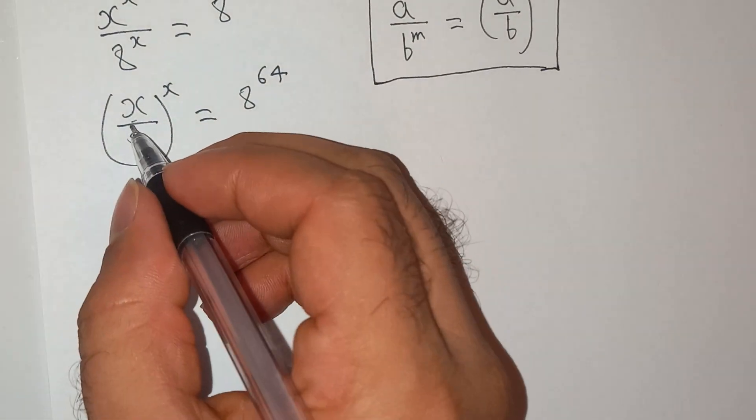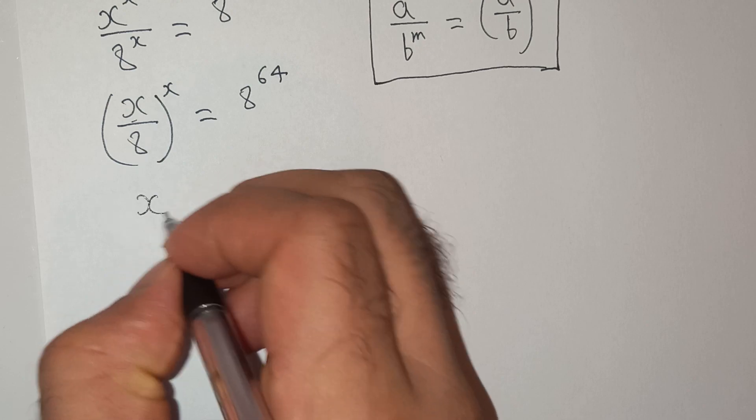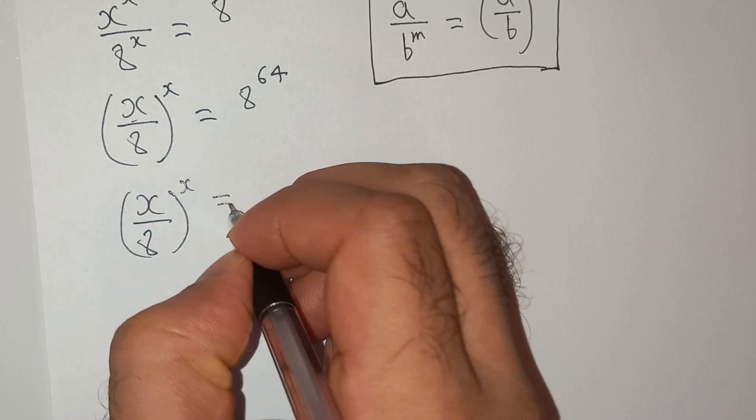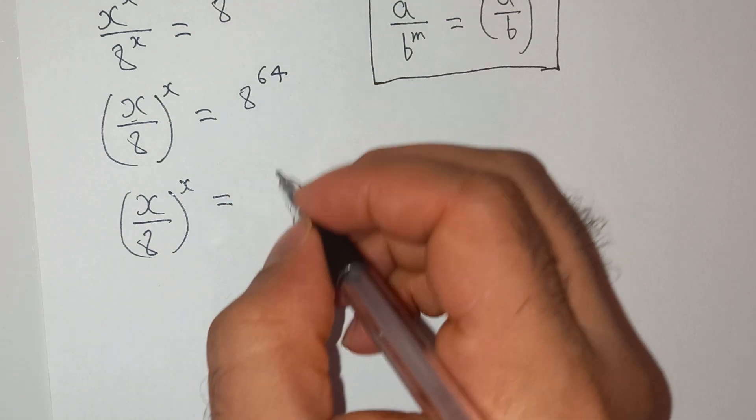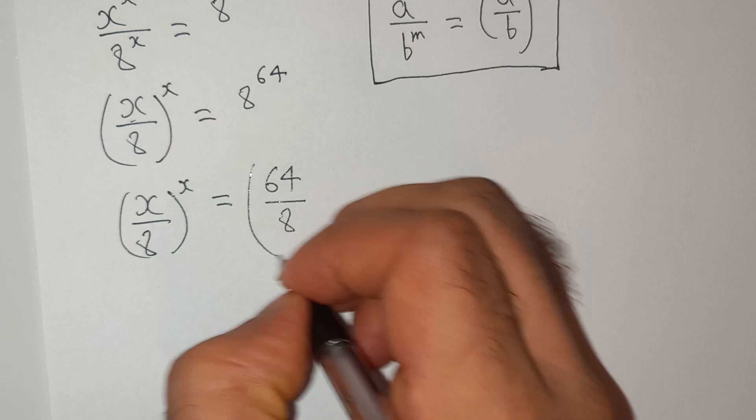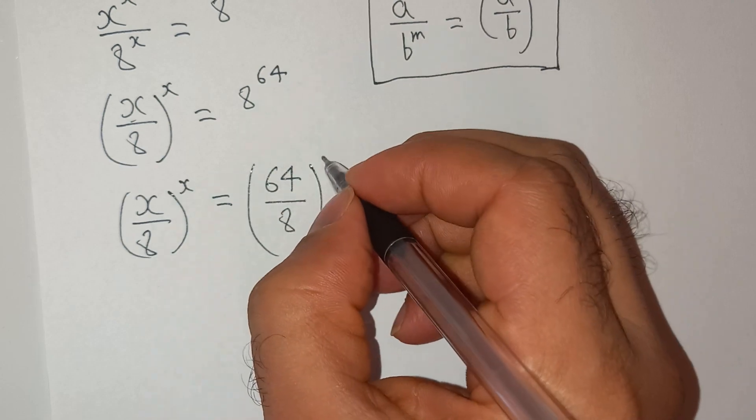Now here is a trick. We can write this as x divided by 8 power x equals to, now this 8 can be written as 64 divided by 8 power 64.